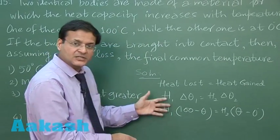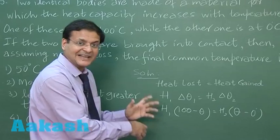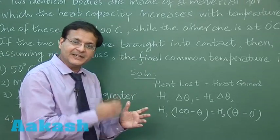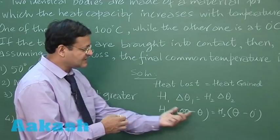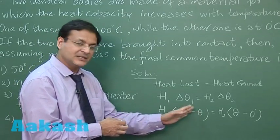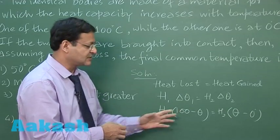So now of course if h1 is larger because it is at higher temperature, and they are saying that with the rise in temperature the heat capacity increases, so if this is large this has to be small. So that way theta will be larger than 50 degree Celsius, you understand.